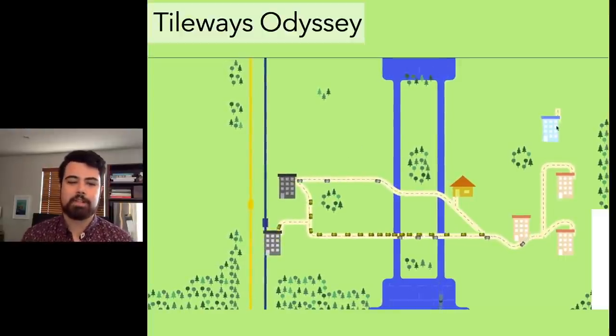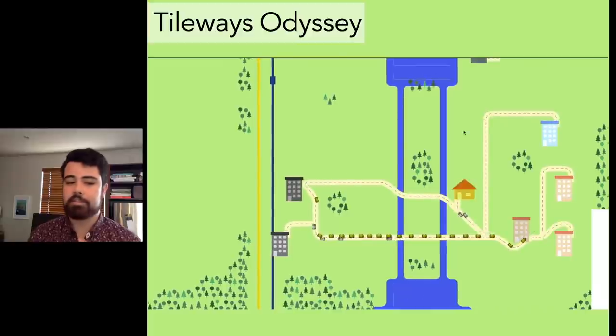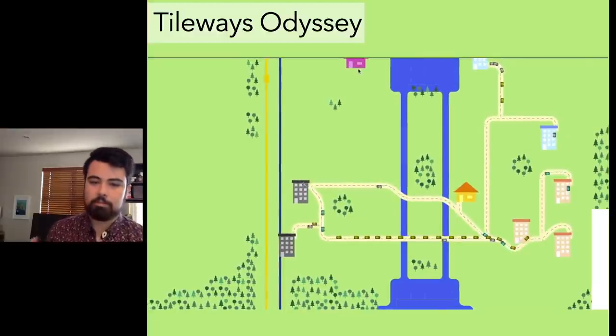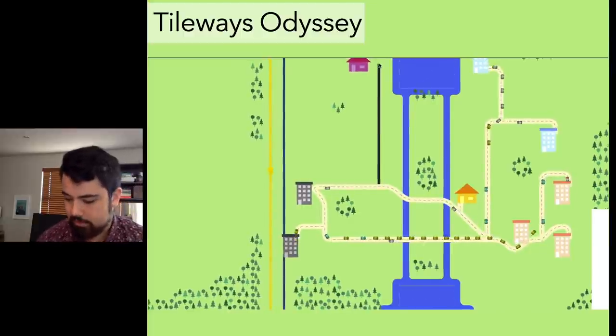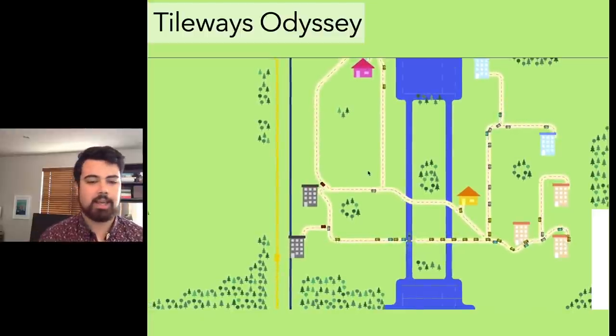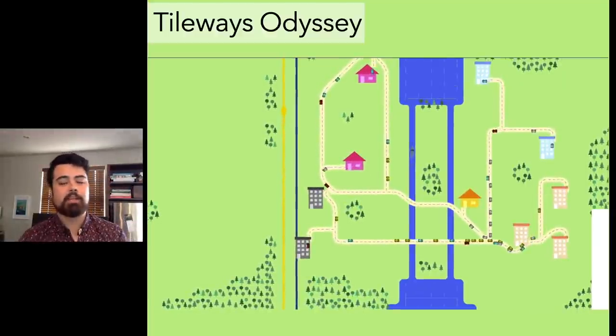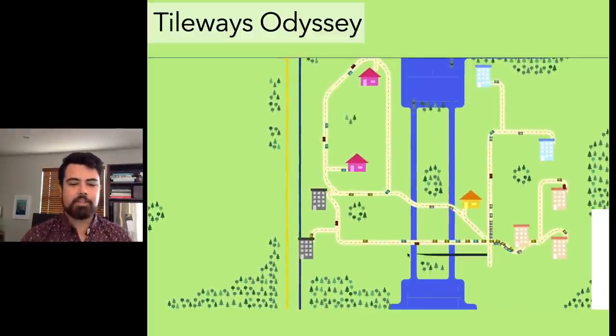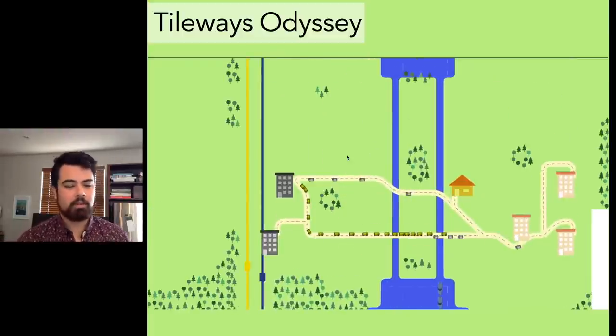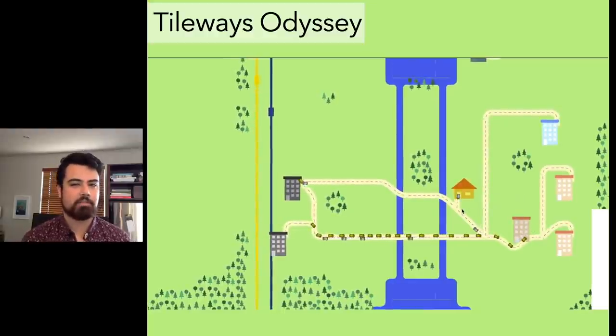The last variation is Tileways Odyssey. The idea was that instead of traffic jams being the main way for cars to stop, it would be environmental congestion. So when the boat appears, the drawbridge comes into effect and the cars would have to stop for it. This prototype introduced eight-way roads and a basic implementation of motorways.